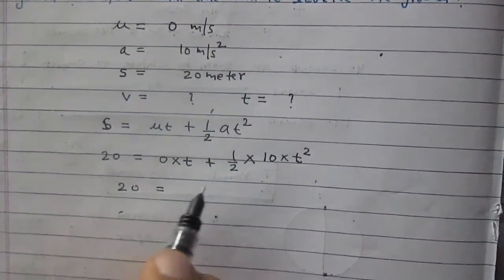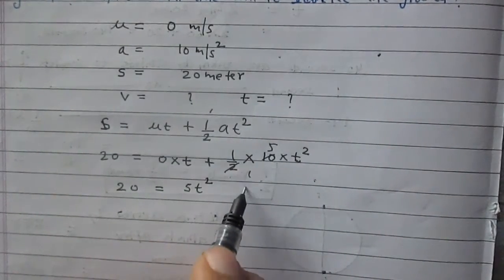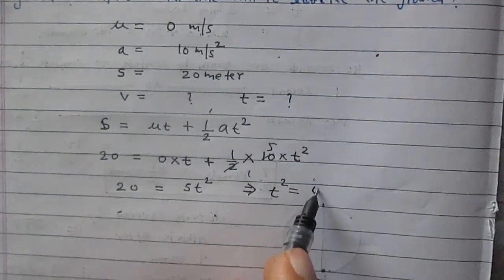It is 20 equals 5t square, or you can say t square is 4.